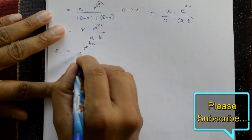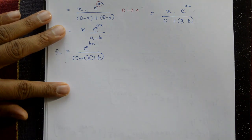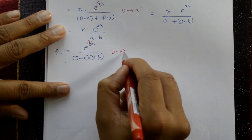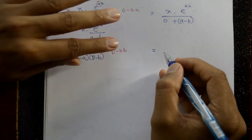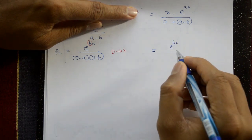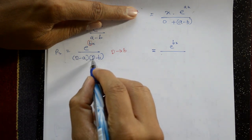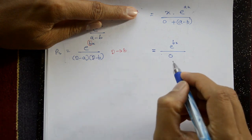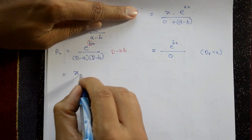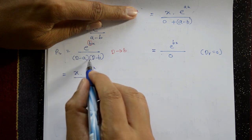Now solving P₂: P₂ = e^(bx) / [(D-a)(D-b)]. Putting D = b: denominator = (b-a)(b-b) = 0, again zero. So multiply by x: x·e^(bx) / f'(D), where f'(D) is differentiated similarly.